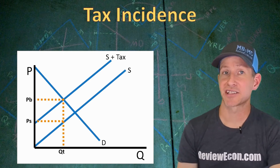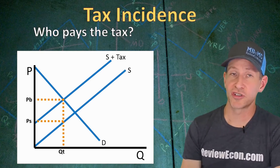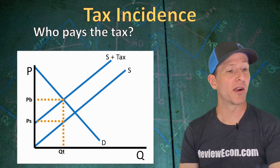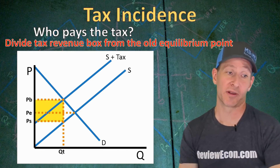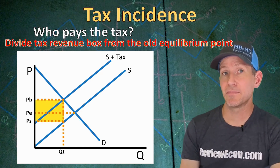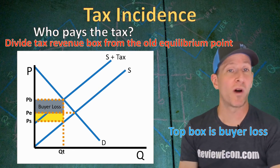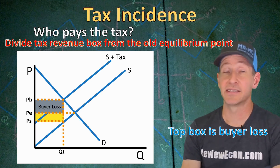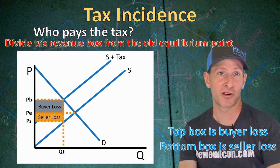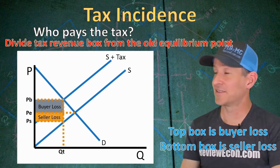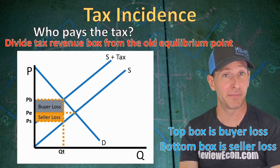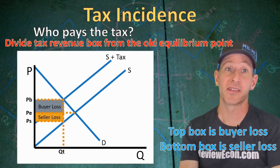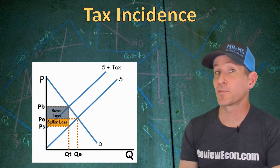Finally, we're going to talk about tax incidence or tax burden — here we are looking at who pays the tax. Are consumers bearing the burden or are producers bearing the burden? Most of the time that burden will be split between the two. We are going to take the tax revenue box and divide it from the old equilibrium point. The difference between PB and PE is the amount that consumers pay per unit on the tax — multiply that by the quantity sold and that gives us the area of the buyer's loss rectangle, showing how much of the tax revenue is paid by consumers. The difference between PE and PS is the per unit amount that producers pay — multiply that by the quantity after the tax and that gives us the seller's loss rectangle. So on this graph, while consumers and producers are both paying some of the tax, the buyer's loss is a little bigger than the seller's loss.